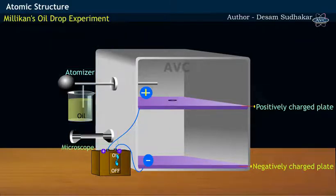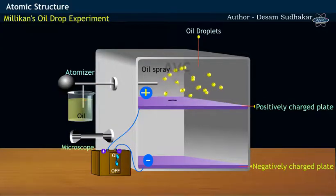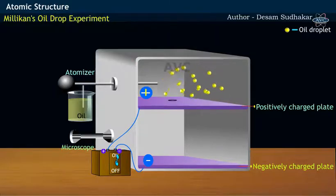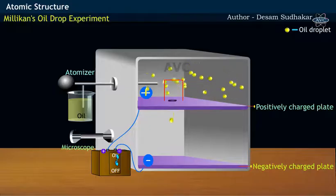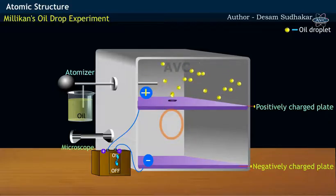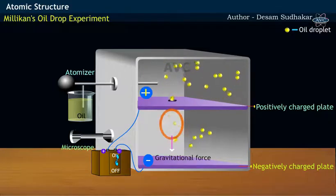In Millikan's experiment, with the help of an atomizer, a fine spray of oil droplet is sprayed into the upper chamber. It is observed that most of the tiny oil droplets spread all over the surface, while few oil droplets, moving with certain velocity, enter into the lower compartment under the influence of gravitational force.